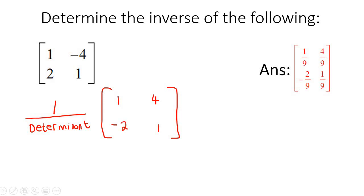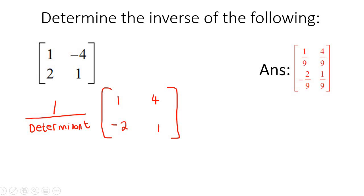So you switch the main diagonal elements around, and for the other diagonal you change their signs. You might be wondering — could you maybe switch the signs and then switch those around instead? No, it has to be specifically the way I showed. This diagonal is the one you switch, and with the other one you change their signs.